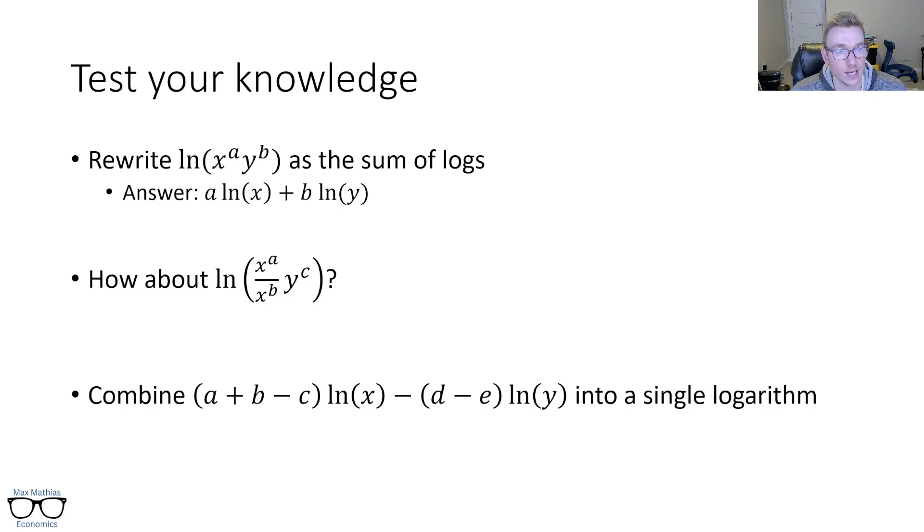For that one, then, the next one, log x to the a over x to the b times y to the c, you will get, again, combining here, order of operations doesn't really matter. You will get a minus b log x plus c log y. So the big thing there is we're using that exponent rule of x to the power a over x to the power b is the same as x to the a minus b. At that point, then, you can split the logs and then bring them out front.